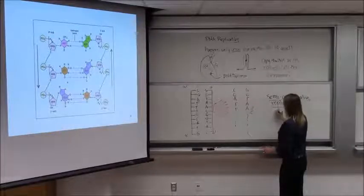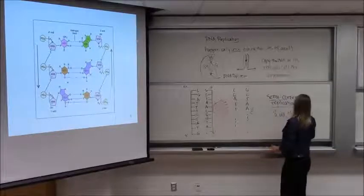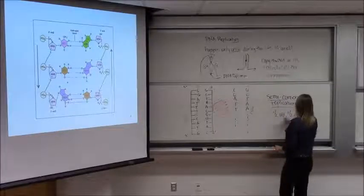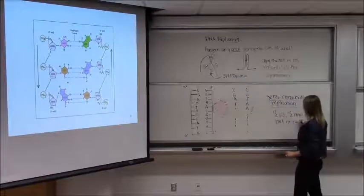Another option — which is what really happens — is not making one strand completely new and one completely old. Instead, the two strands split apart and we copy each side so that our new DNA is really half old, half new. It's called semi-conservative replication.